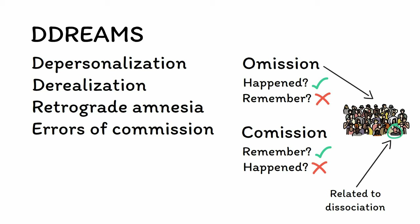This is not to say that most people don't make commission errors of memory as well, as they absolutely do. However, people who dissociate tend to remember false or suggested memories with a much higher frequency than most people, and with a vividness closer to their memories of actual events.